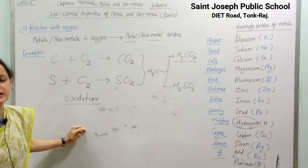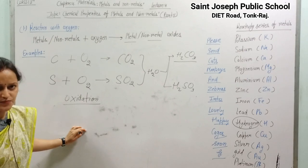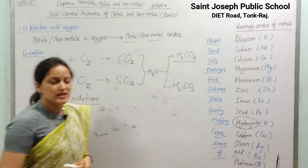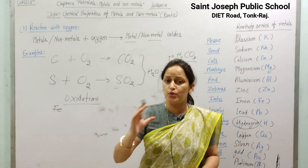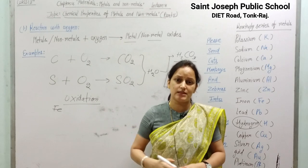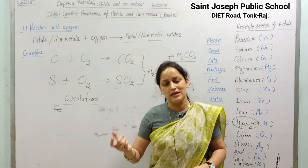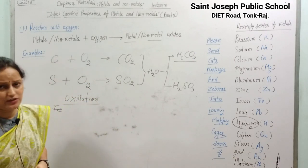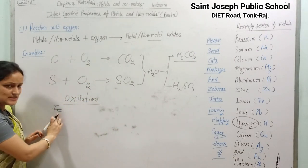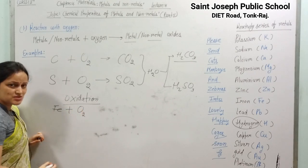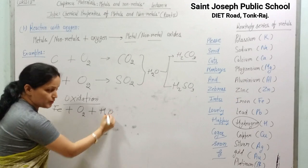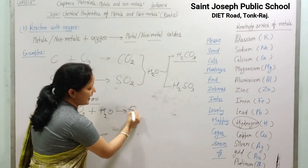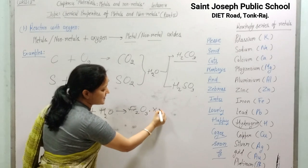Let us talk about the oxidation process of two common metals. First, iron: in the rainy season you must have observed that the surface of iron generally gets a coating of reddish-brown colour. That reddish coating is called rust, and the process is called rusting. The chemical reaction involved is: iron reacts with atmospheric oxygen gas and water molecules — these are the necessary conditions for rusting of iron.